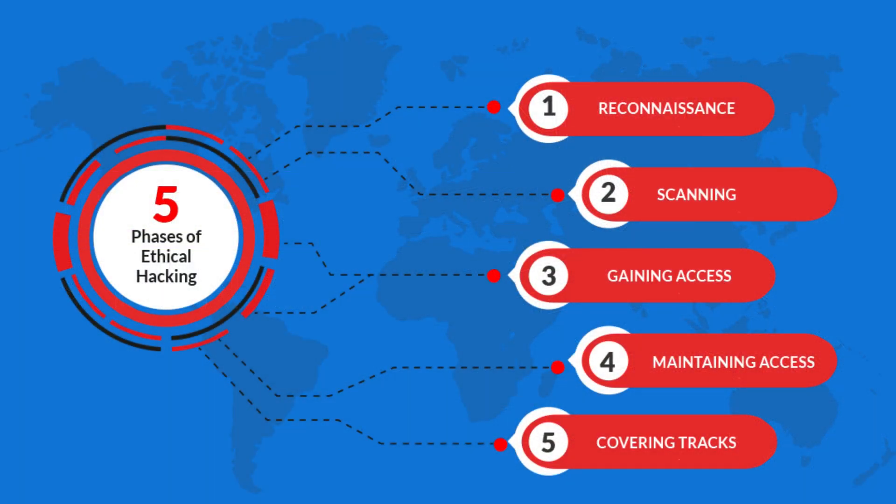Let's walk through the ethical hacking process step by step. First, ethical hackers gather information about the target — known as reconnaissance. This helps them understand potential weakness points. They may use both passive and active methods.